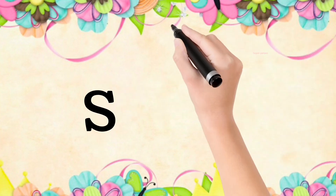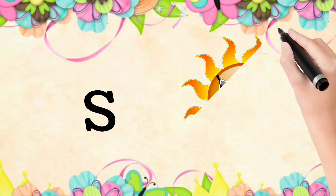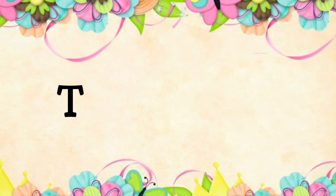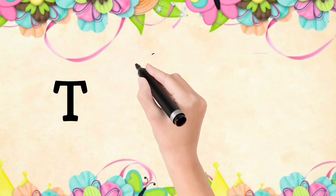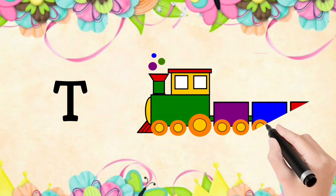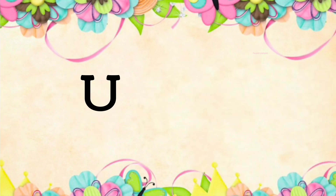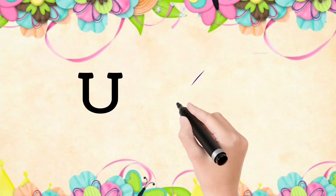S is for sun, T is for train, U is for umbrella.